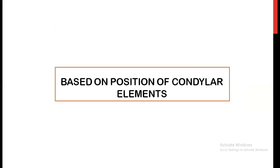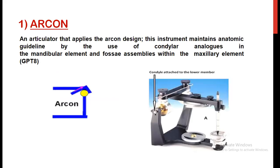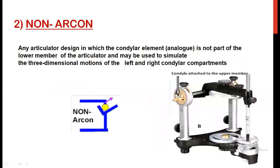The second classification is based on the position of condylar elements. We can divide articulators into two types: arcon and non-arcon. The term arcon was coined by Bergstrom, derived from the two words articulator and condyl. In an arcon articulator, it contains two elements: the condylar element and the condylar guidance. The condylar element anatomically represents the condylar head, and condylar guidance anatomically represents the glenoid fossa. If the condylar element is in the lower member and condylar guidance is in the upper member, it is called an arcon articulator. In a non-arcon articulator, the condylar element is in the upper member and condylar guidance is in the lower member.